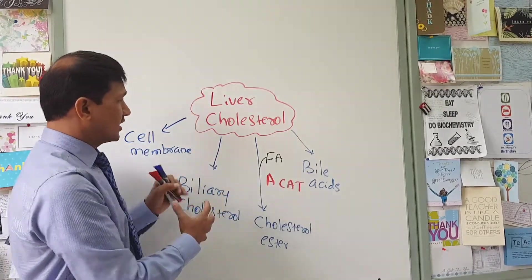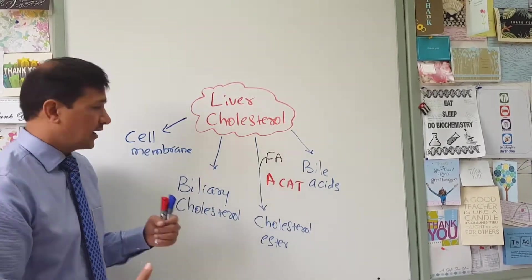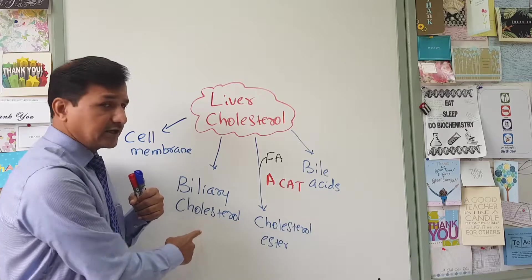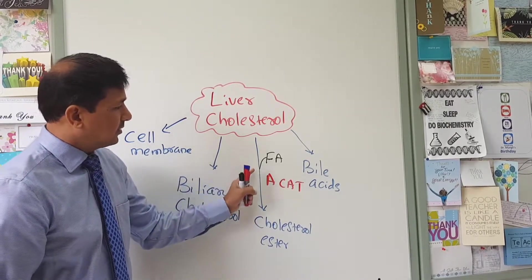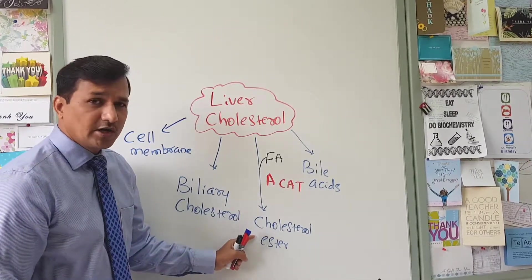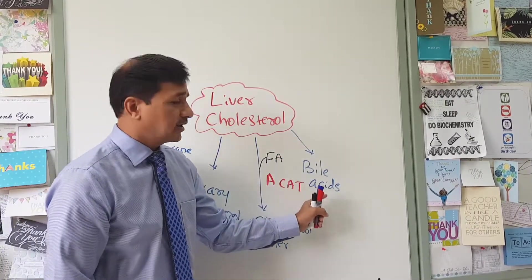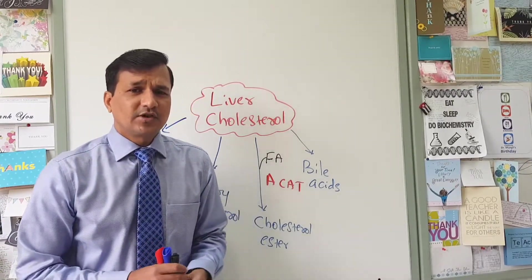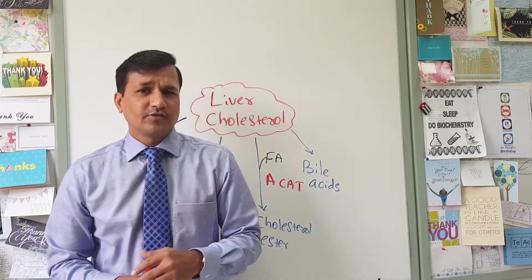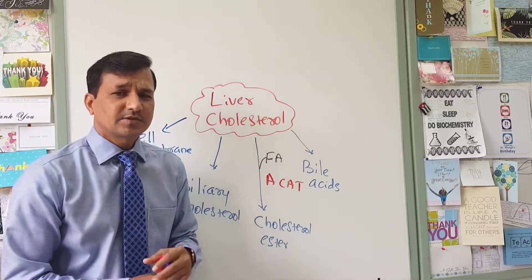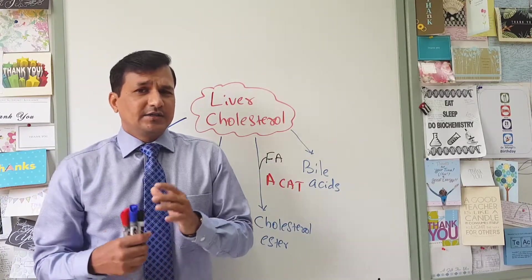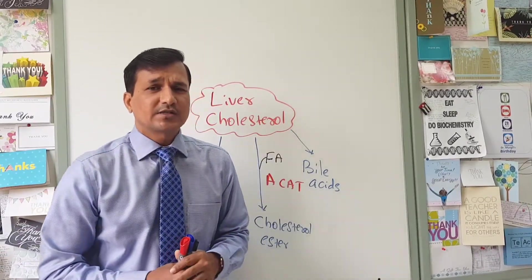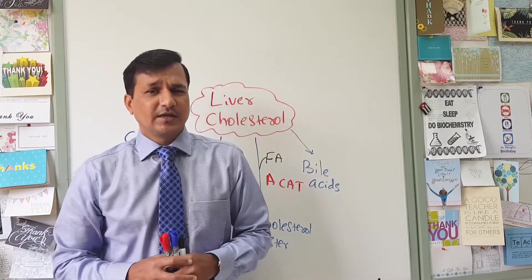So these are the four fates of cholesterol in the liver. To summarize: it can be used for cell membrane formation, it can be excreted in the bile as biliary cholesterol, it can be esterified to become cholesterol ester, and it can be converted into bile acids. Thanks for watching. For updates and new video notifications, kindly subscribe to the channel. If you have any questions, leave them in the comment section below and I will try to answer them as quickly as possible. See you in my next video.